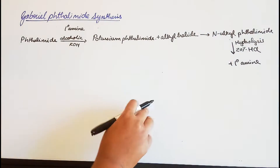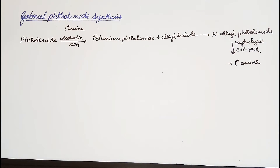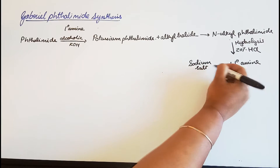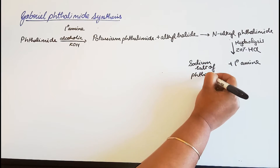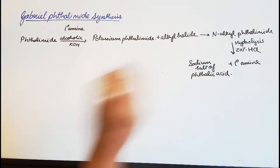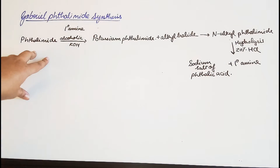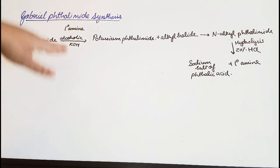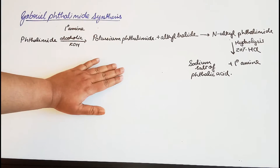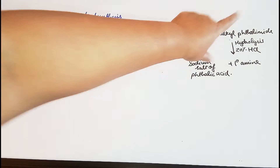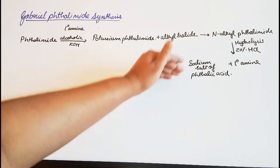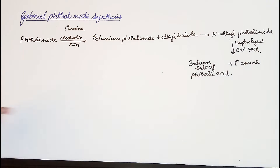Along with the primary amine, we also get the sodium salt of phthalic acid. So to summarize: phthalimide is converted to potassium phthalimide with alcoholic KOH; potassium phthalimide reacts with an alkyl halide to give N-alkyl phthalimide; hydrolysis gives the sodium salt of phthalic acid and a primary amine.